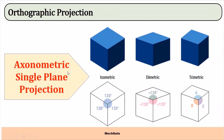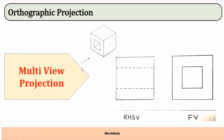In isometric projection, the angles between all three axes X, Y, and Z are equal at 120 degrees. In diametric projection, the angle between X and Y is greater than 120 degrees and the other two remaining angles are less than 120 degrees. In triametric projection, all three angles are different. These are the basic differences between isometric, diametric, and triametric projections.